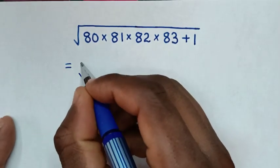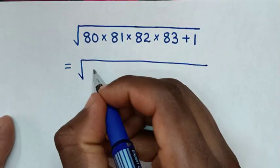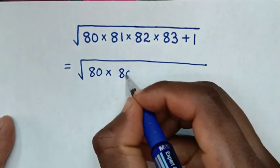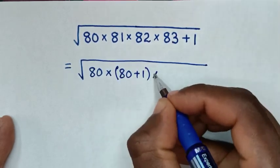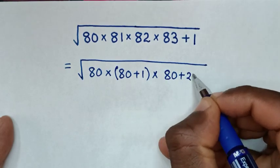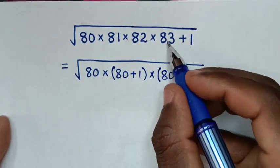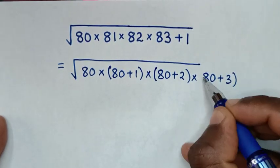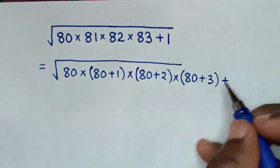It will be equal to the square root of 80, then times 81 — which is the same as (80+1) — times 82, which is (80+2), times 83, which is (80+3), then plus 1.